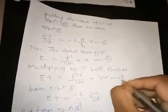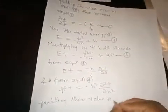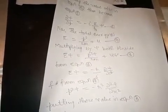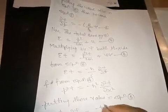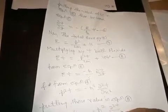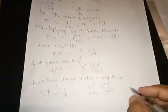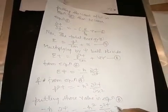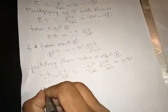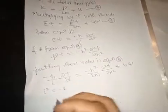Putting these values in equation 8: minus (ℏ/i)(∂ψ/∂t) equals minus ℏ²(∂²ψ/∂x²)/2m plus Uψ.